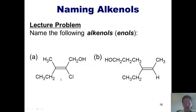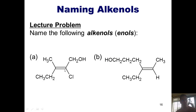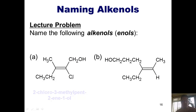Let's look at some enol naming examples. For the first one, I number starting at the carbon bearing the OH going right-to-left: 1, 2, 3, 4, 5 — five carbons, so it's a pentene. The alcohol is at carbon 1 and the double bond begins at carbon 2, making it pent-2-ene-1-ol. Adding the substituents — a chlorine at carbon 2 and a methyl at carbon 3 — the full name is 2-chloro-3-methyl-pent-2-ene-1-ol.